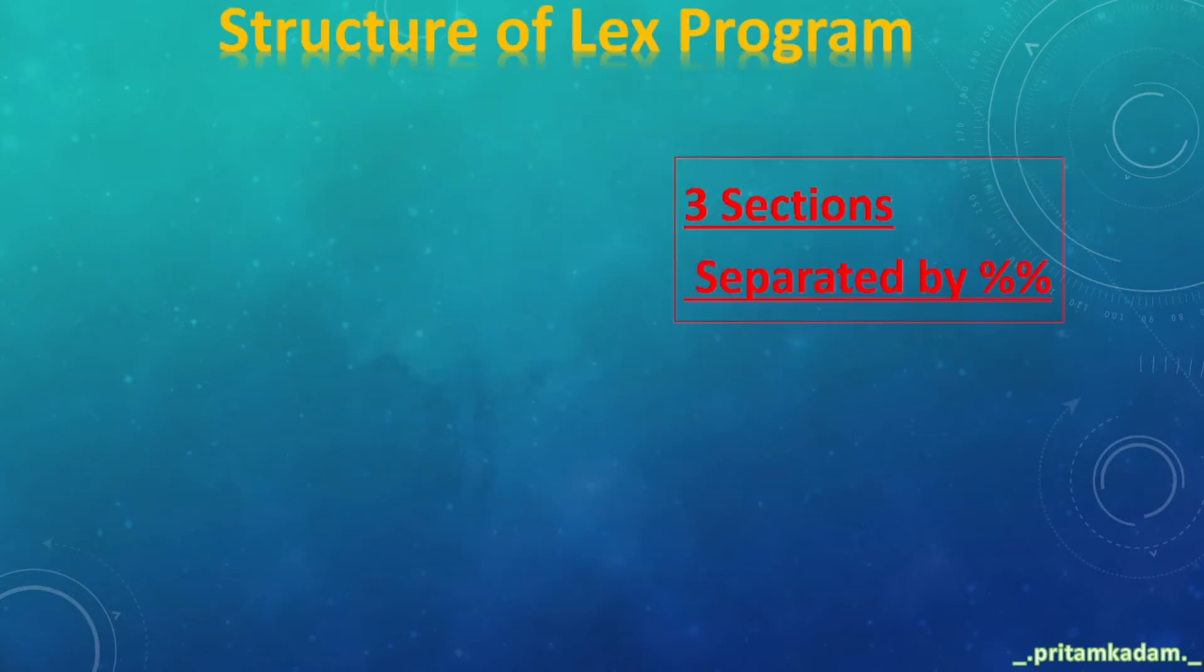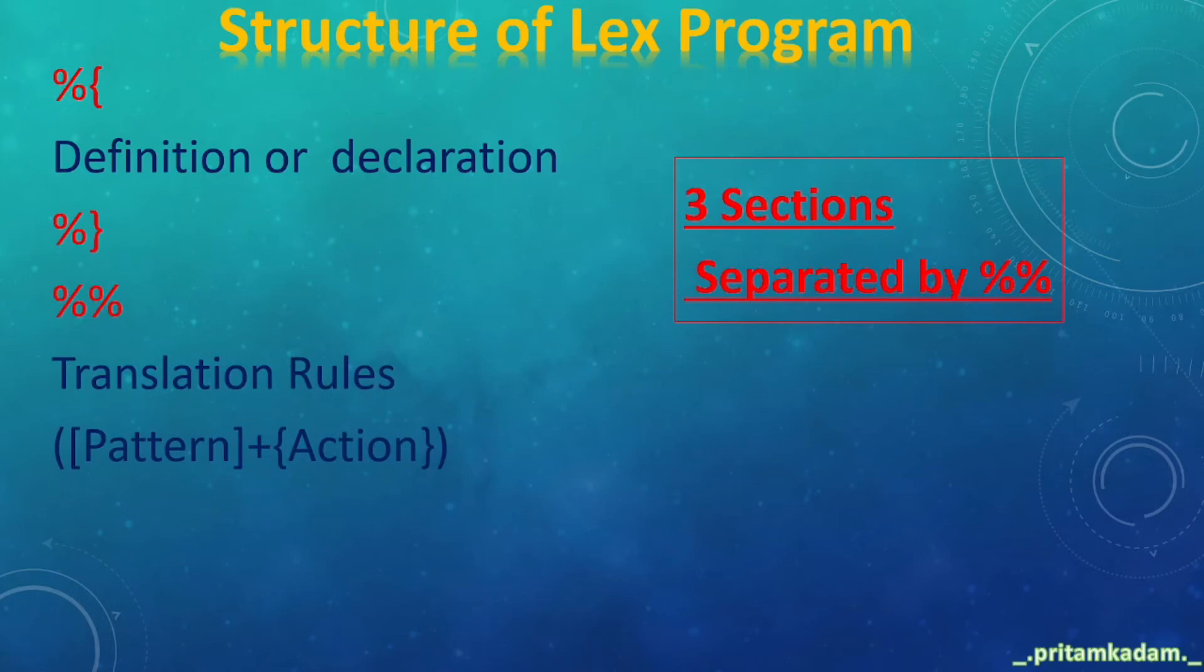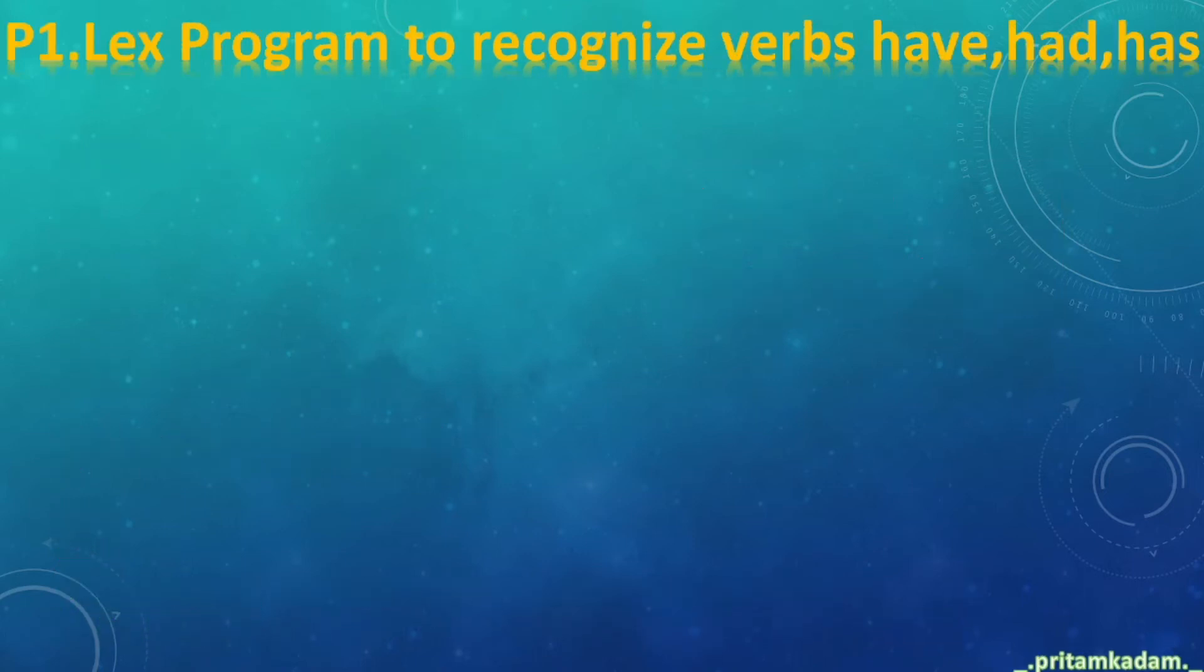Now let's go to the structure of a lex program. There are three sections separated by %%. First, in the first section there is definition or declaration written in curly braces. Then, separated by double ampersand, translation rules: first select the pattern and then action to be performed. Then we have to write the procedure in the void main.